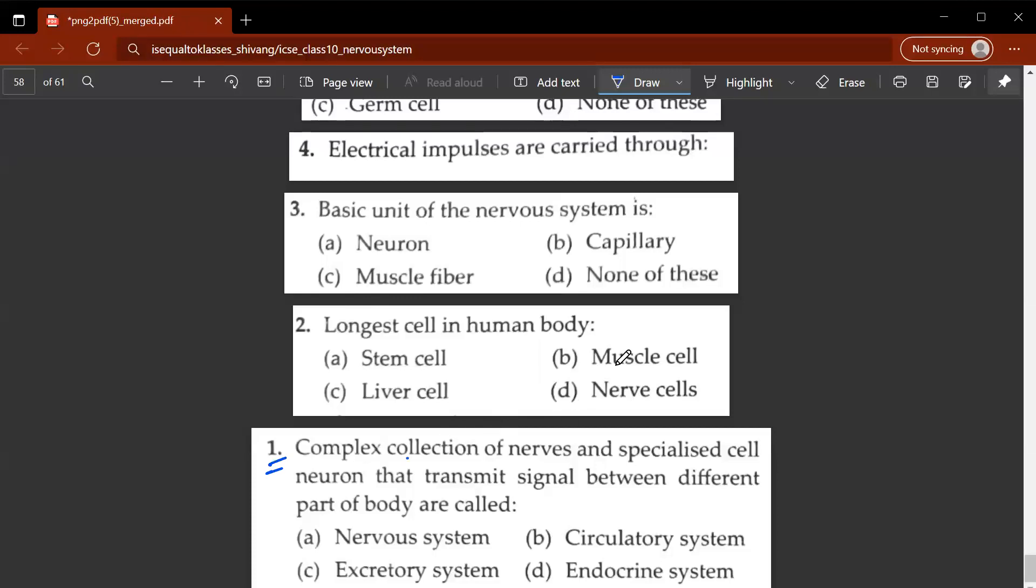The first question: complex collection of nerves and specialized cells, a neuron, that transmits signals between different parts of the body. That's called a nervous system. Second question, longest cell in the human body is a nerve cell.